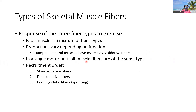When you think about a motor unit — a single motor neuron and all the fibers it innervates — all the fibers in a motor unit must be of the same type. So while within a large muscle we can have many different fiber types, the fibers attached to a single motor neuron must all be of the same fiber type.